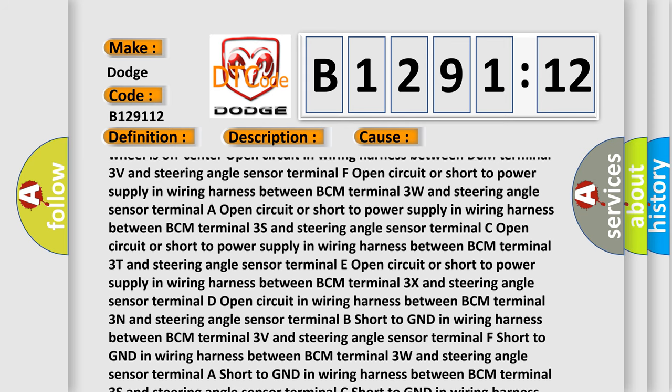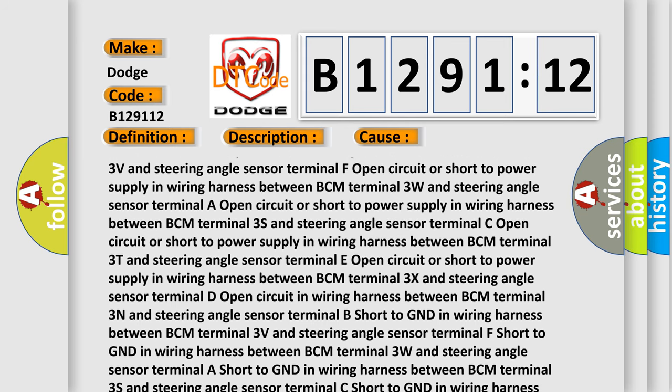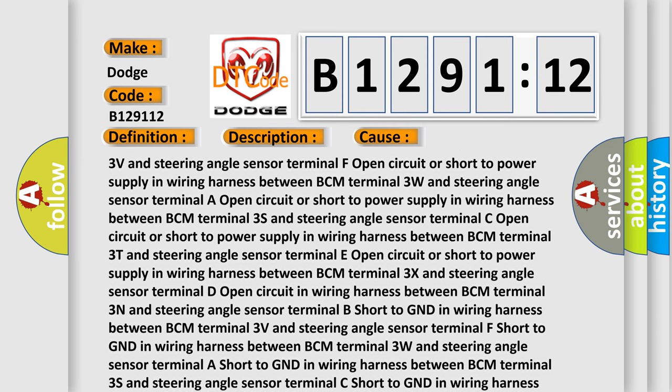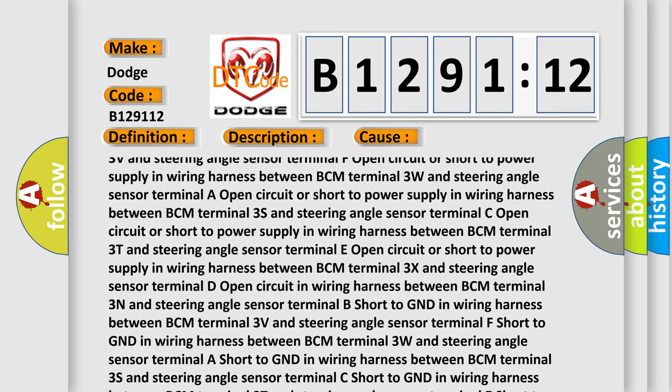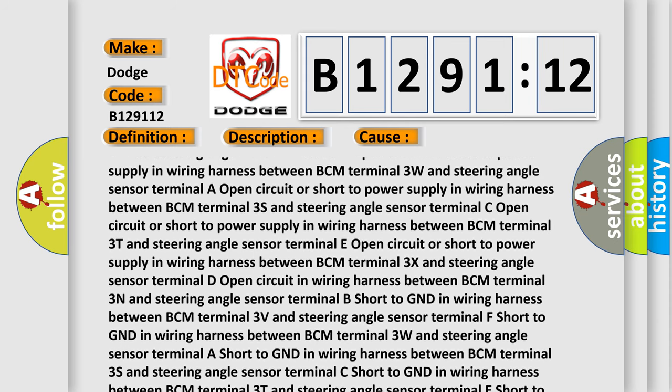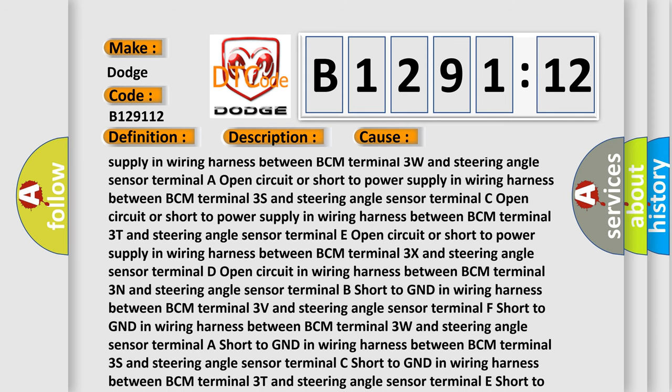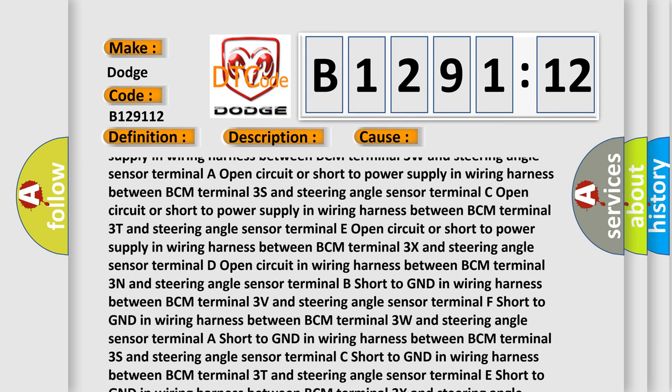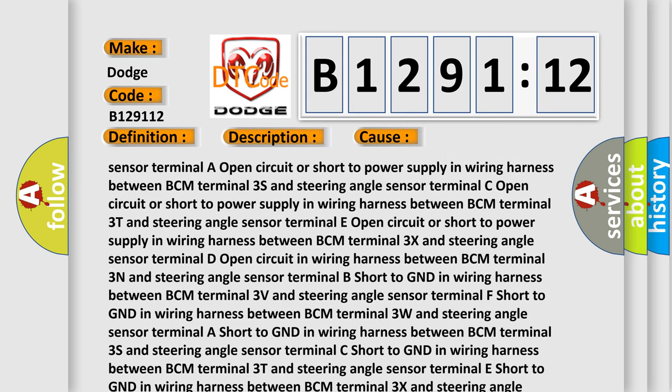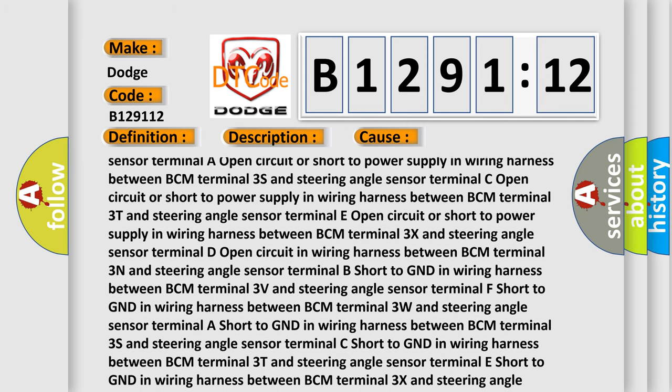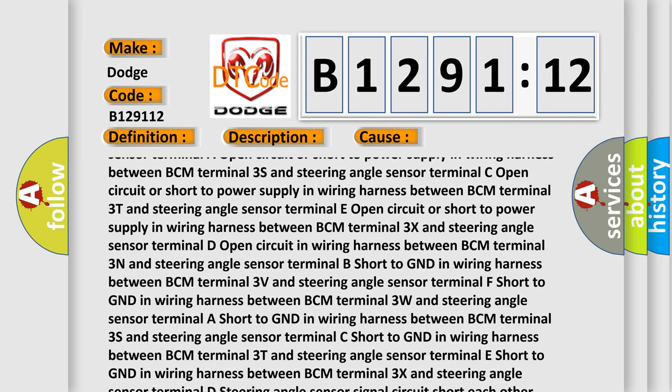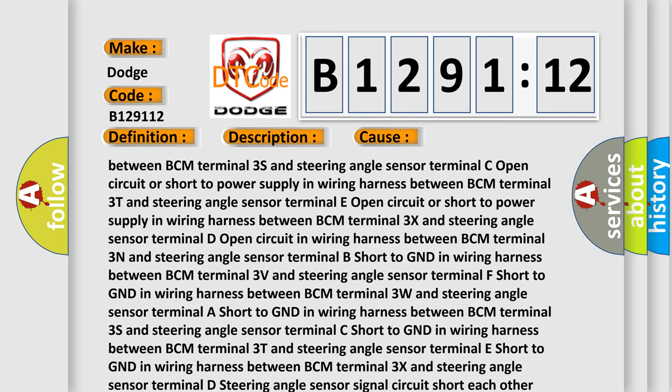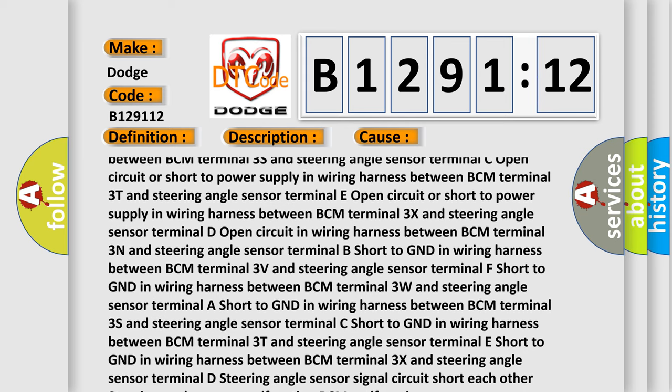Open circuit or short to power supply in wiring harness between BCM Terminal 3T and steering angle sensor terminal E. Open circuit or short to power supply in wiring harness between BCM Terminal 3X and steering angle sensor terminal D. Open circuit in wiring harness between BCM Terminal 3N and steering angle sensor terminal B.